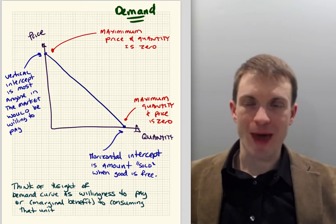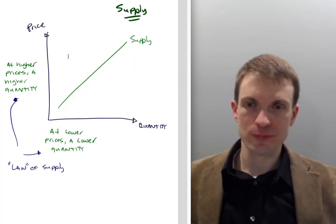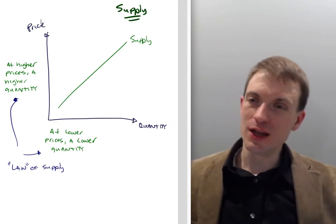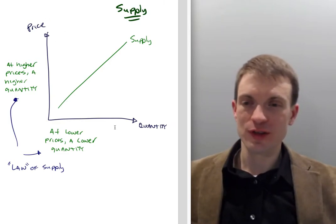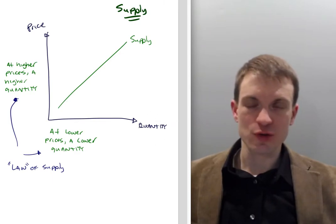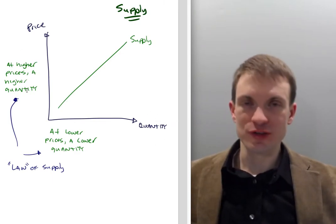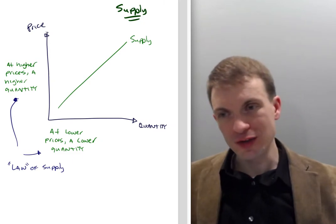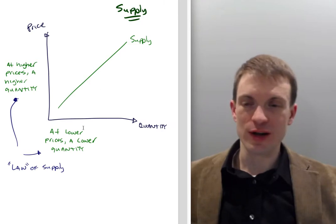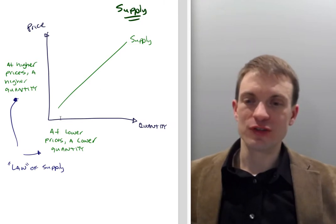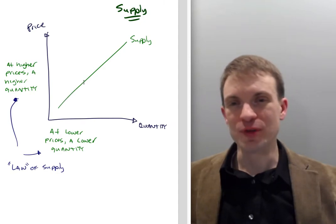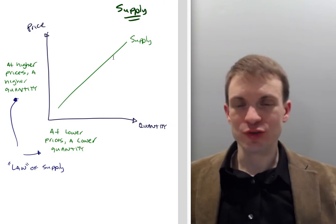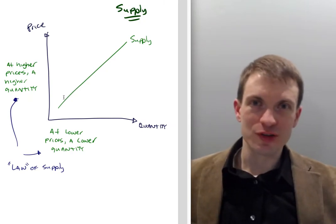The vertical intercept of the demand curve is the maximal willingness to pay. Now for supply: on the same axes, with price vertical and quantity horizontal, at higher prices there's a higher quantity supplied, and at lower prices there's a lower quantity supplied. As you go up the supply curve, price is rising and quantity supplied is rising. Going down the supply curve, price is falling and quantity supplied is falling.